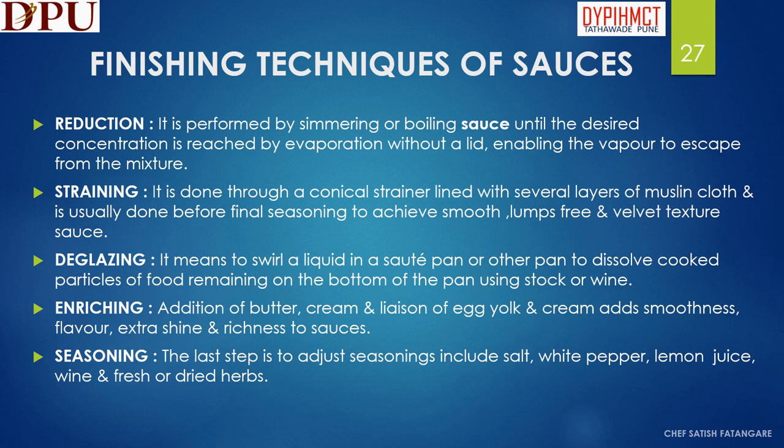In this slide we will discuss about the finishing techniques of sauces. Reduction: it is performed by simmering or boiling the sauce until the desired concentration is reached by evaporation, without a lid, enabling the vapor to escape from the mixture. Straining: it is done through a conical strainer lined with several layers of muslin cloth and is usually done before final seasoning, to achieve a smooth, lump-free and well-set texture. Deglazing: it means to swirl a liquid in a sauté pan to dissolve cooked particles of food remaining on the bottom of the pan, using stock or wine. Enriching: addition of butter, cream and liaison of egg yolk and cream adds smoothness, flavor, extra shine and richness to sauces. Seasoning: the last step is to adjust seasonings which include salt, white pepper, lemon juice, wine and fresh or dried herbs.